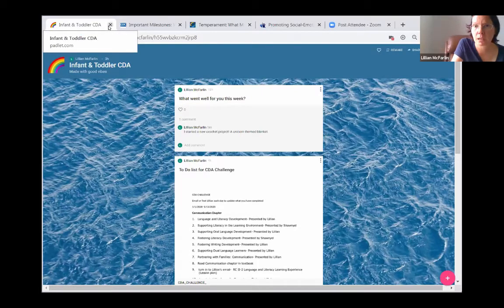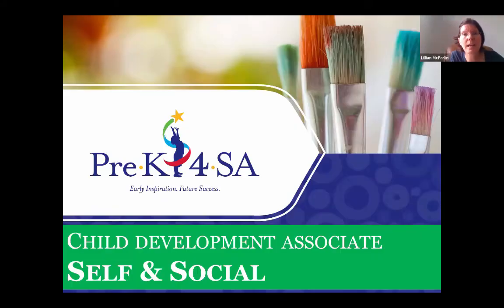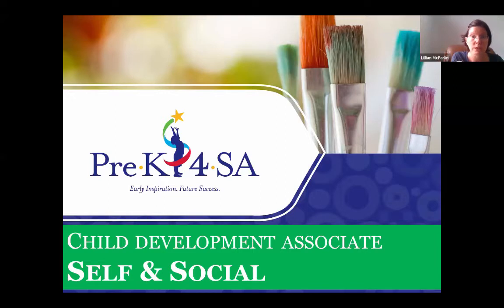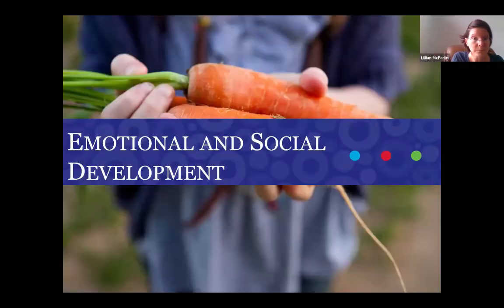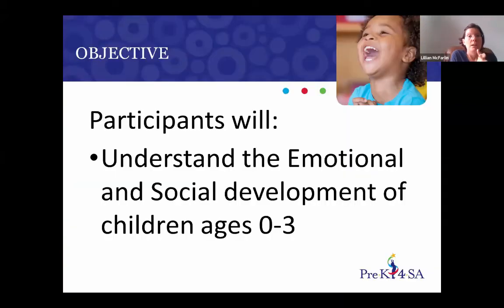So today we're going to do it a little differently. I did a different kind of presentation — it's going to be very succinct, the information pulled directly from the book, the kinds of things it wants you to know about self and social development. We're not going to get nitpicky into stuff you're not going to get tested on. We're looking at understanding the emotional and social development of children ages birth through three years of age.